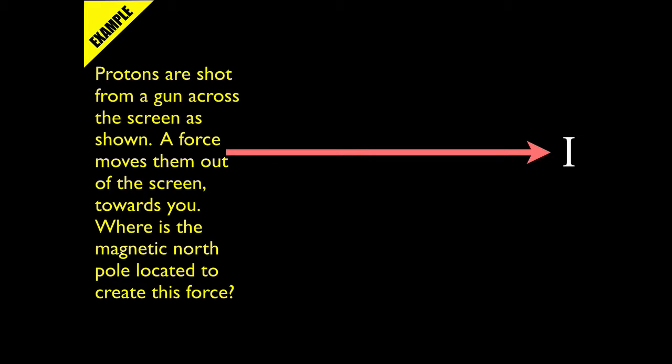Here's another example problem using the open right hand rule. Protons are shot from a gun across the screen as shown. A force moves them out of the screen towards you. Where is the magnetic north pole located to create this force?